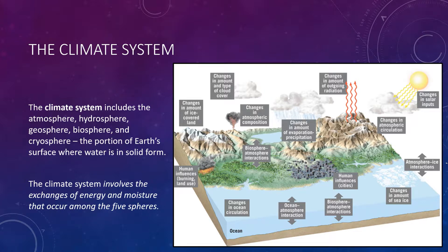The climate system involves the exchanges of energy and moisture that occur along the five spheres. These exchanges link the atmosphere to the other spheres to form an extremely complex interactive whole. Changes to the climate system do not occur in isolation; when one part of it changes, the other components respond. Climate has a profound impact on many of Earth's external processes, and this graphic shows many of the different interactions that our climate has.